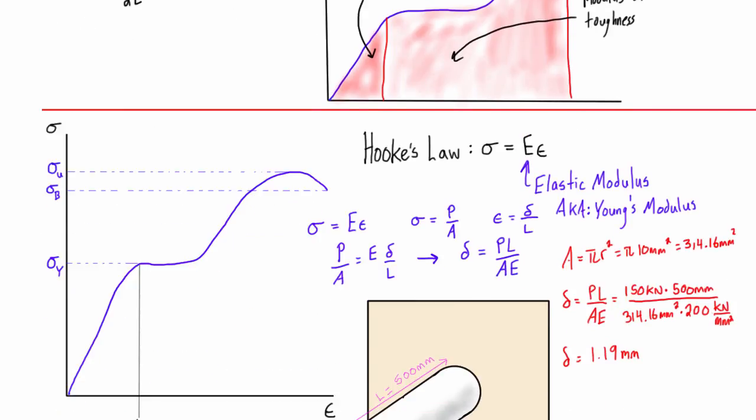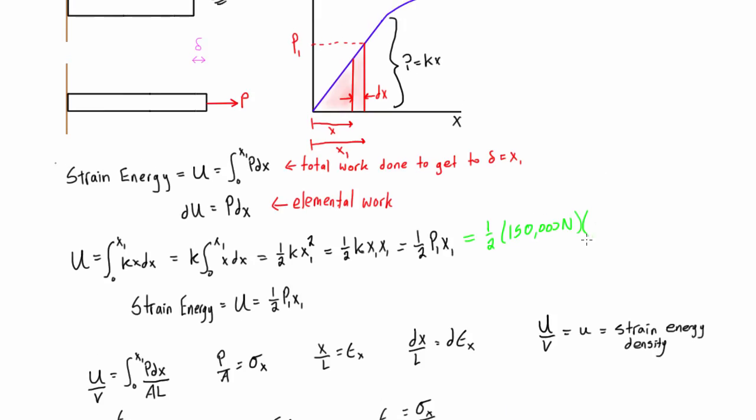Which was, I think that was 1.19 millimeters? Yeah, 1.19 millimeters. In meters, that is 0.00119 meters. And if you crunch that, you get 89.25 newton meters.